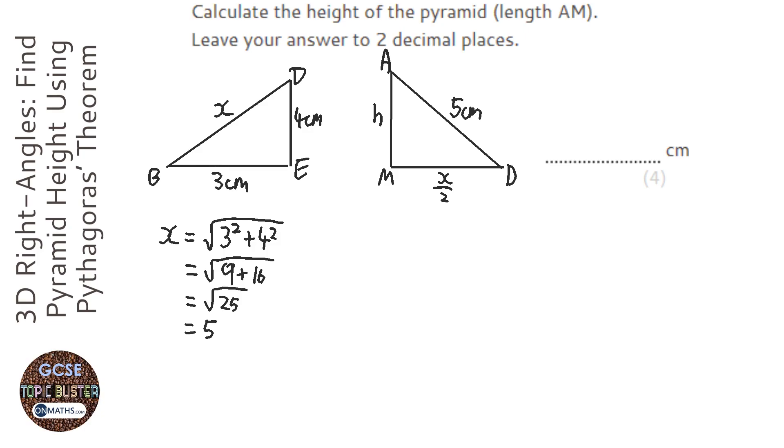I would leave it as a root if it doesn't work exactly, so I'd leave it as a square root. Okay, so we know what this one's going to be. It's going to be X divided by 2, which is 2.5.